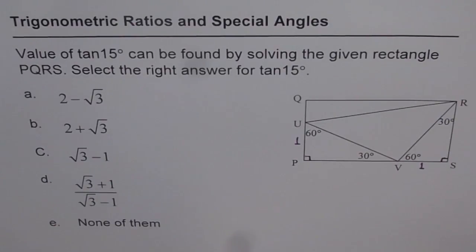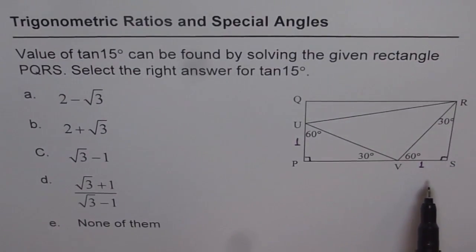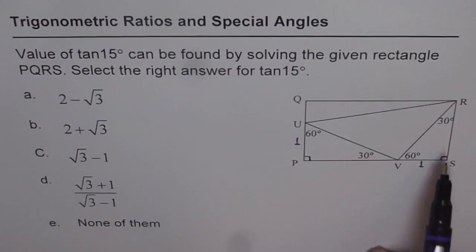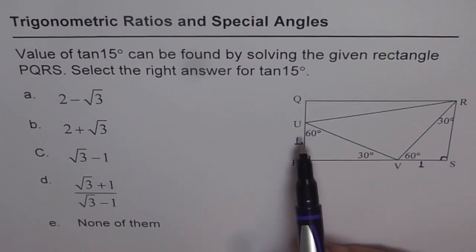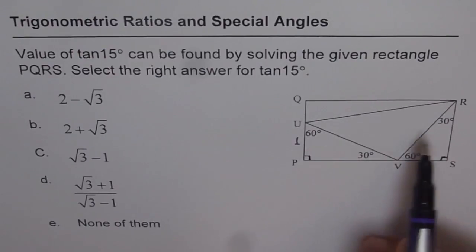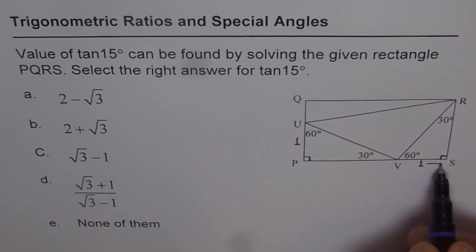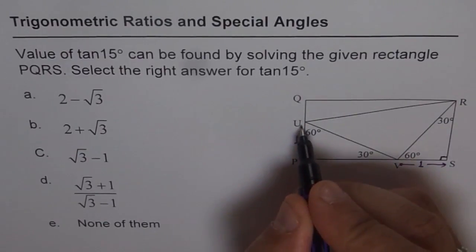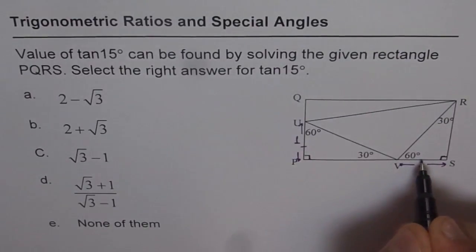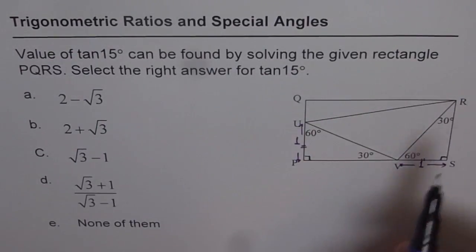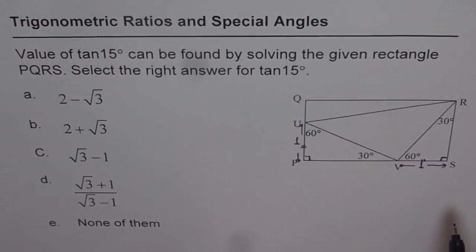Select the right answer for tan 15 degrees — you have 5 choices. On the right side, the figure PQRS is a rectangle in which there is a triangle UVR. That triangle makes angles of 30 degrees and 60 degrees as shown, and importantly, side VS is 1 unit, as is side UP. So these two sides are equal — that is what is given. Now what you need to find is the value of tan 15 degrees.